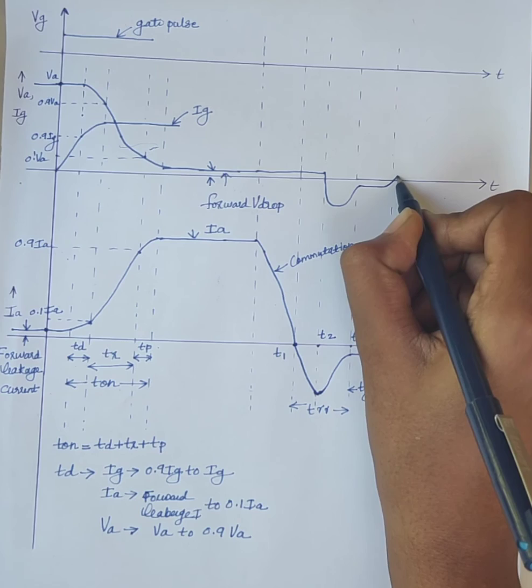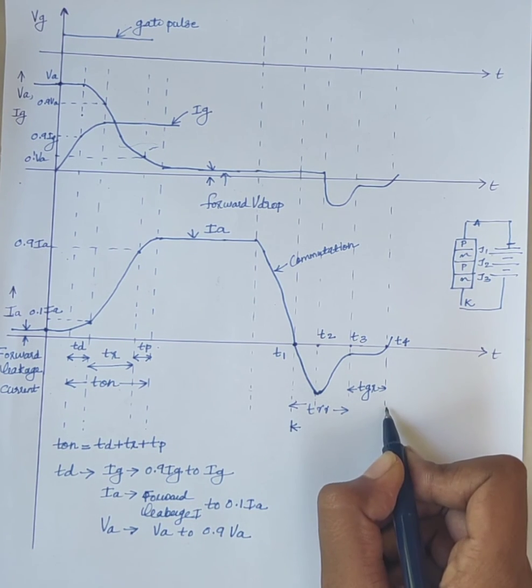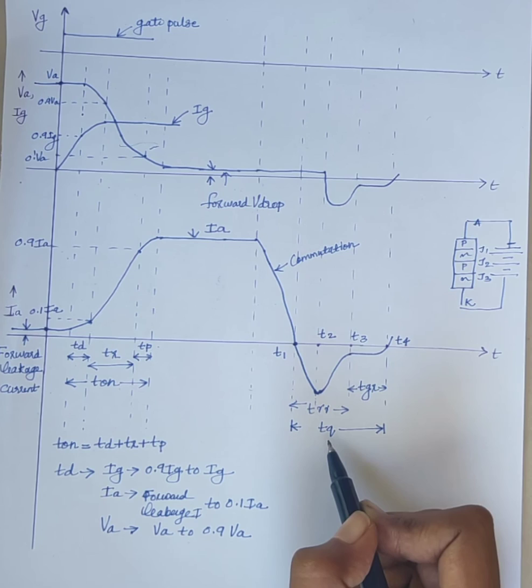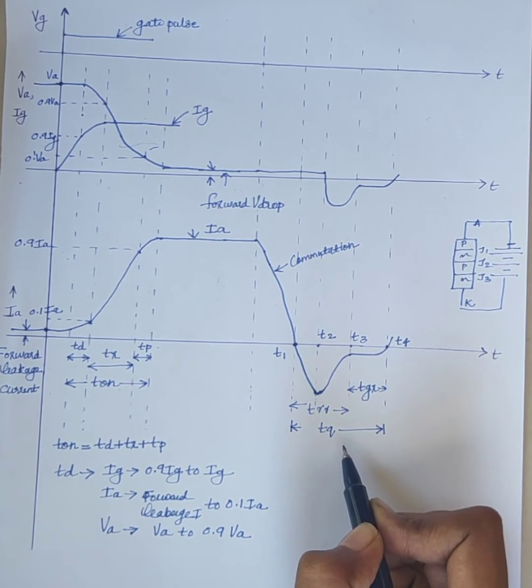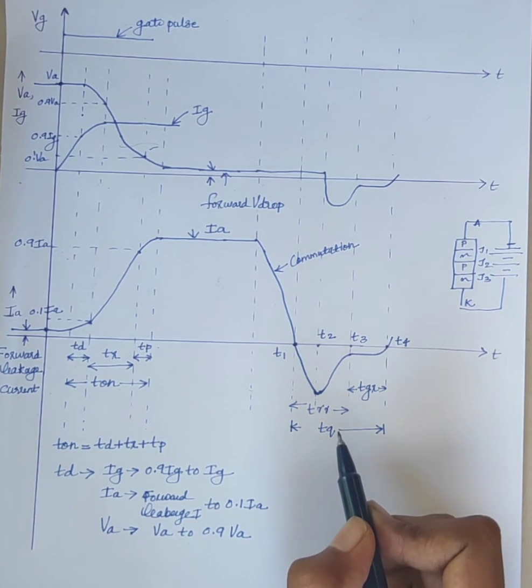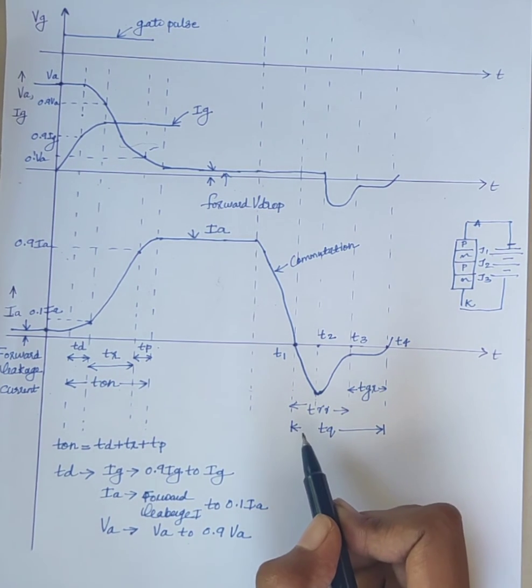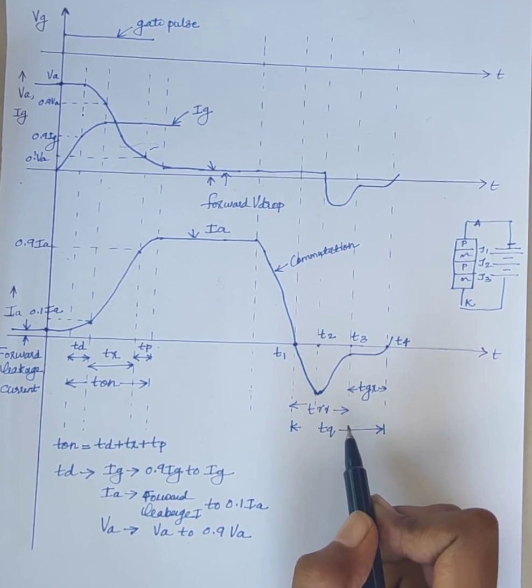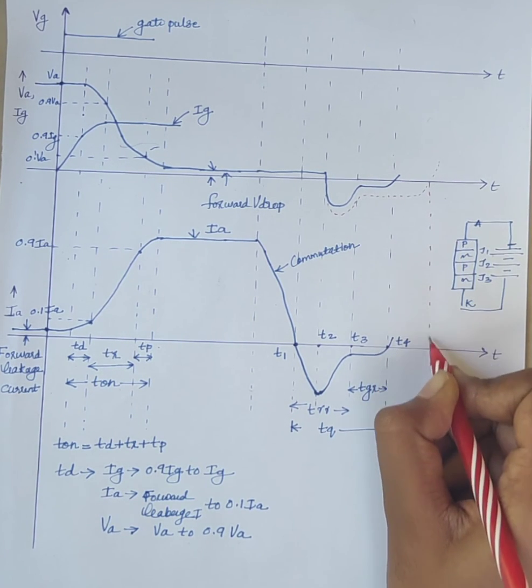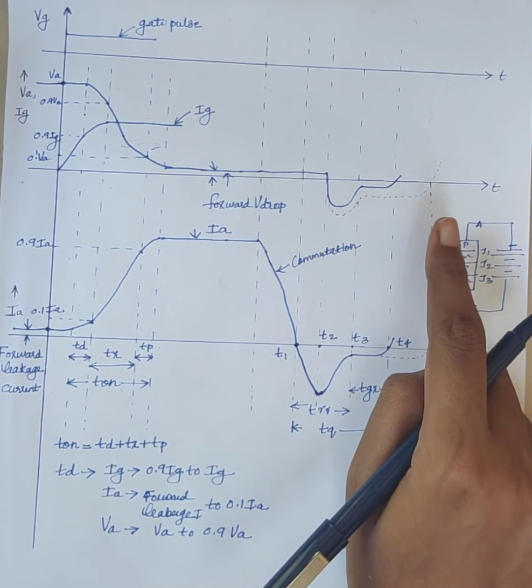Here also voltage goes to positive value. The total time, TRR plus TGR is known as TQ. TQ means thyristor turnoff time. The thyristor turnoff time TQ is applicable to an individual SCR. In actual practice, SCR form a part of a power circuit. The turnoff time provided to the SCR by the practical circuit is called circuit turnoff time TC. So in case of circuit turnoff time, characteristics represented by dotted line. So this portion indicates circuit turnoff time TC.